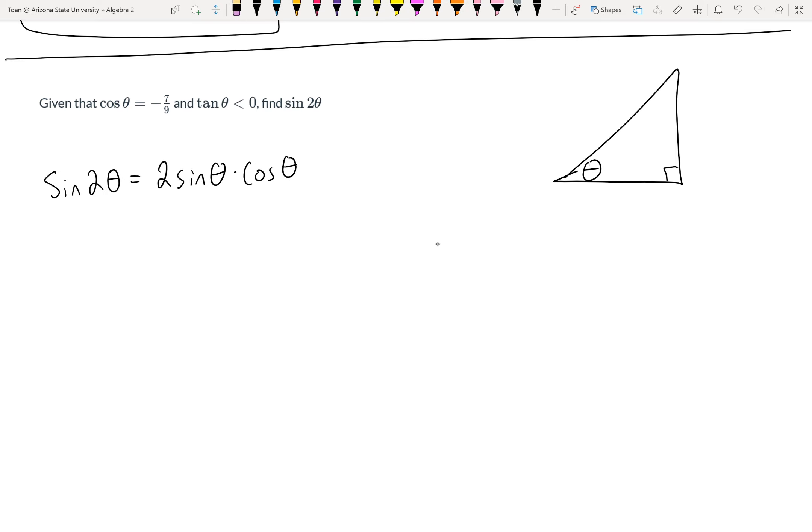Knowing that cosine is adjacent over hypotenuse, for this picture the adjacent is 7 and the hypotenuse is 9. That leaves me to use Pythagorean theorem to find the missing side length. The square root of 81 minus 49, that is √32.